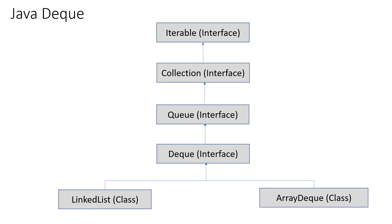Let's see how the Java Deque is implemented. In Java we have the Iterable interface, which is extended by the Collection interface. Collection is extended by the Queue interface, which is ultimately extended by the Deque interface. The Deque interface gets implemented by a LinkedList class or an ArrayDeque class. The main difference is that in LinkedList the capacity of the Deque is not limited, whereas in ArrayDeque the size and capacity is limited.